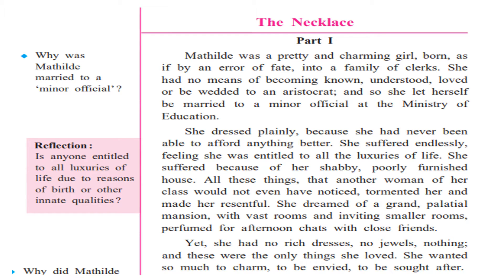Let us start with Lesson 1.5 The Necklace, Part 1. Mathilde was a pretty and charming girl, born as if by an error of fate into a family of clerks. She was so beautiful she deserved to be born in a royal family, but it was the mistake of fate, and that's why she was born into a family of clerks where she could not satisfy any of her desires.